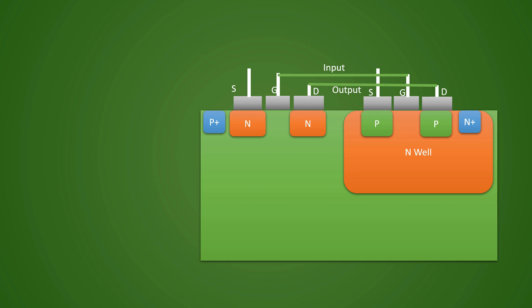Let us try to understand the tie cell working in schematic and layout. This is our CMOS inverter layout, and let us also draw in parallel a CMOS schematic for understanding the concept of tie high and tie low cells better. This is our VDD and this is VSS, this is our PMOS side and this is our NMOS side, with source, drain terminals labeled accordingly.